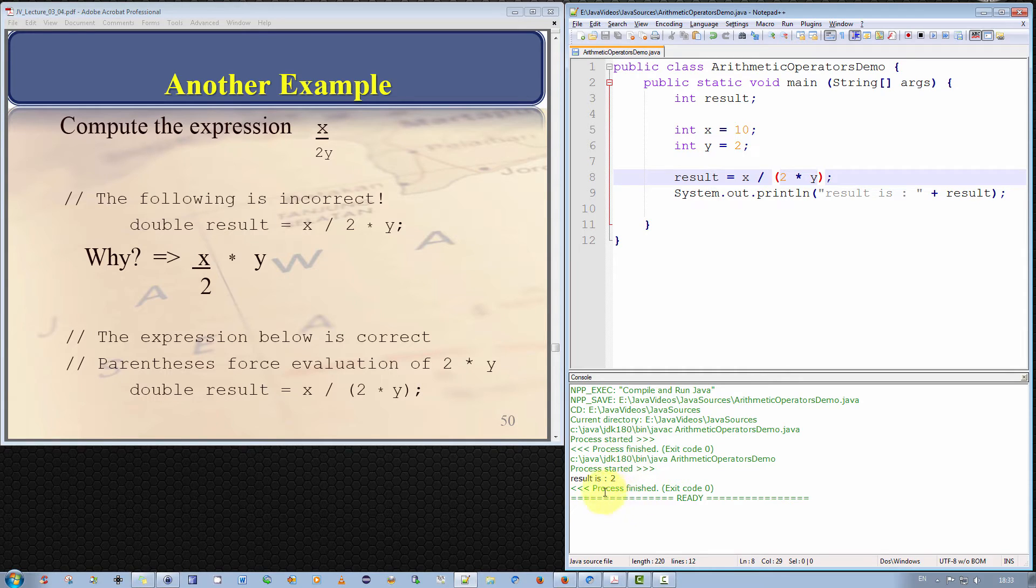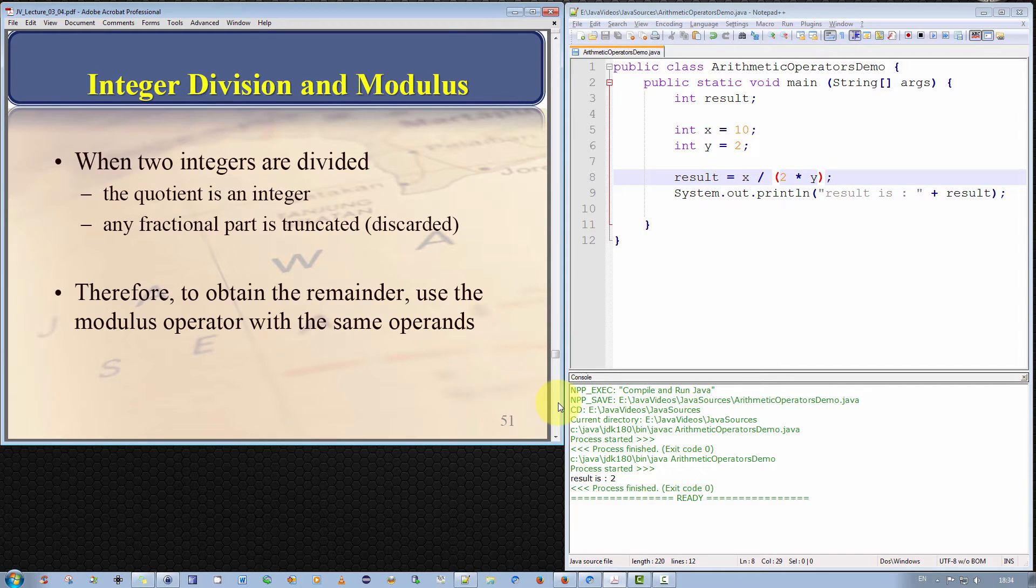Well actually no because we have declared result our variable to be of type integer which means recall that integer data type can only hold whole integer values. It cannot hold fractional or decimal parts. So if we wish to obtain the remainder if you like the fractional component of this operation we actually have to use the modulus operator. So let me explain that.